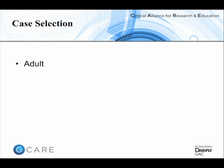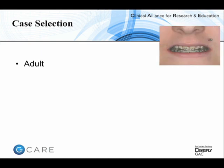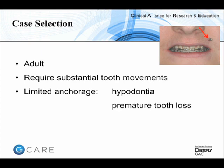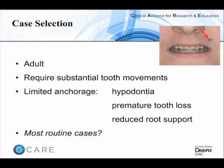When adopting mini-implant techniques for the first time, it's important to identify appropriate cases that are relatively straightforward. We may find adult patients — particularly in the female population — who may have various body piercings and are thus comfortable with the concept. Adult patients can require substantial tooth movements but may have limited anchorage potential due to hypodontia, premature loss of teeth, or teeth with reduced root support from periodontal losses. But arguably there are many routine cases in both teenagers and adults that would benefit from reliable anchorage control.